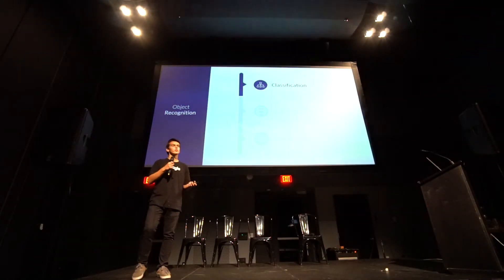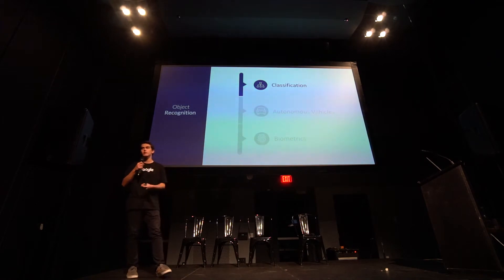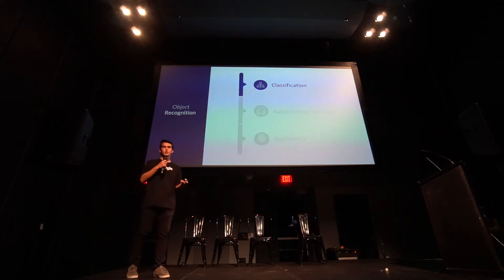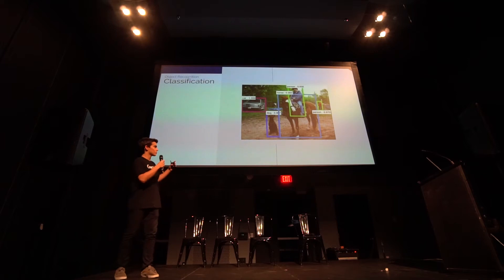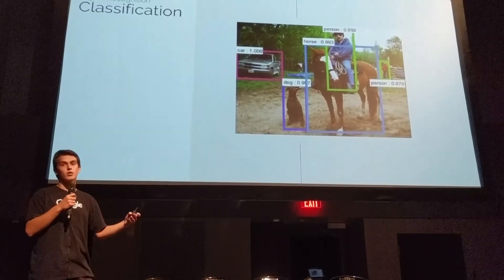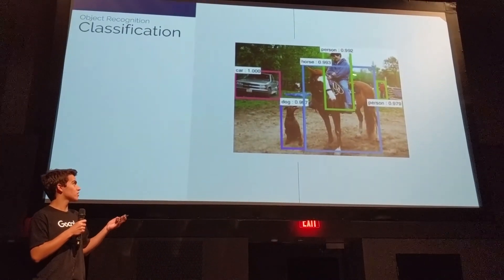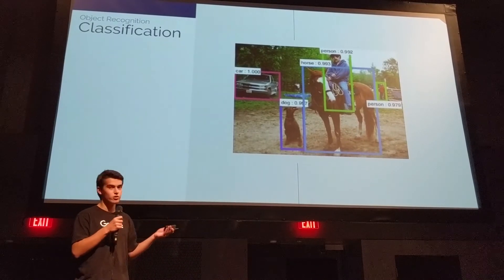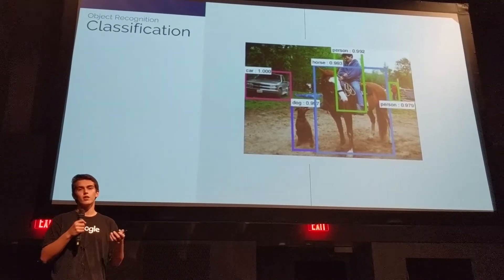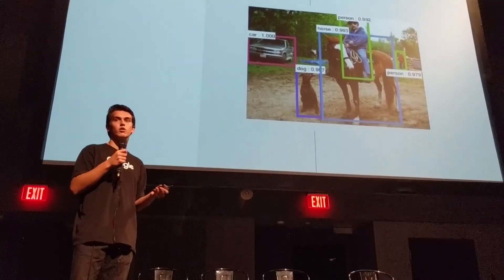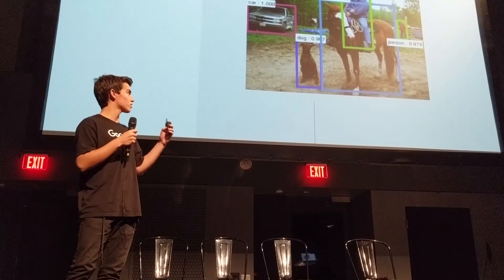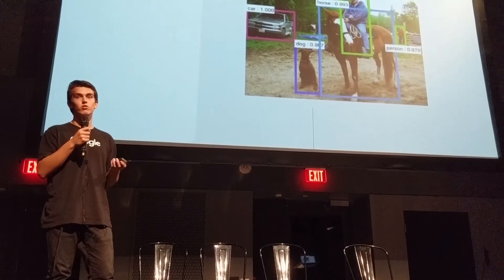Object recognition starts off with classification. Classification goes into a whole bunch of different technologies that we kind of take for granted nowadays. Essentially, object recognition classification looks like this — you get an image and it's already gone through and outlined certain figures. It's comparing what it sees to training data it's already seen: it's recognized humans and highlighted them in green, highlighted animals in blue, with different shades for different types of animals.